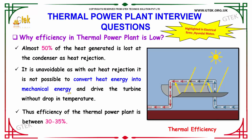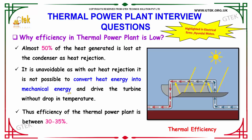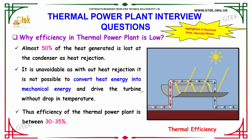Why is the efficiency in a thermal power plant low? Almost 50% of the heat generated is lost at the condenser as heat rejection. It is unavoidable because without heat rejection it is not possible to convert heat energy into mechanical energy that drives the turbine without a drop in temperature. Thus, the efficiency of the thermal power plant is between 30 to 35%.